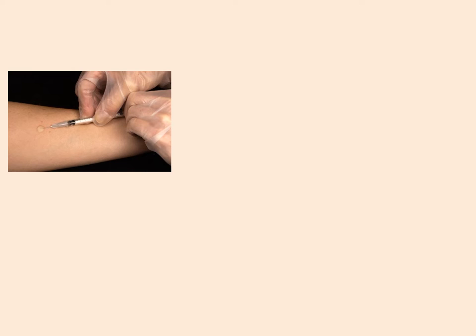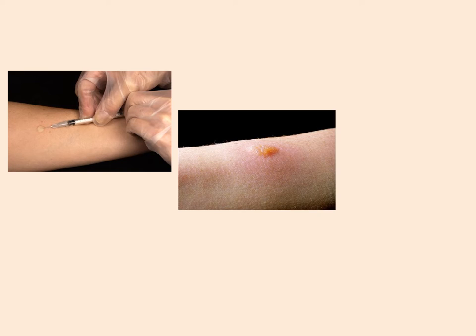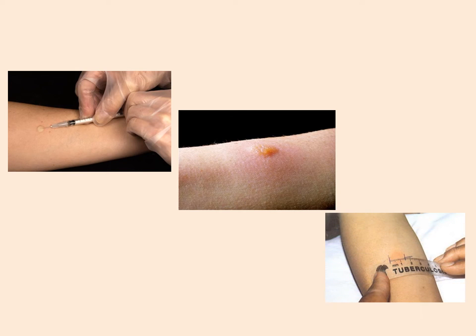This test is called the tuberculin skin test. We insert a protein inside the body and ask the patient to come back after 48 hours to see how swollen and red that area becomes. We do a measurement, and if the diameter of that red area is more than a certain number of centimeters, we say that person might have tuberculosis.